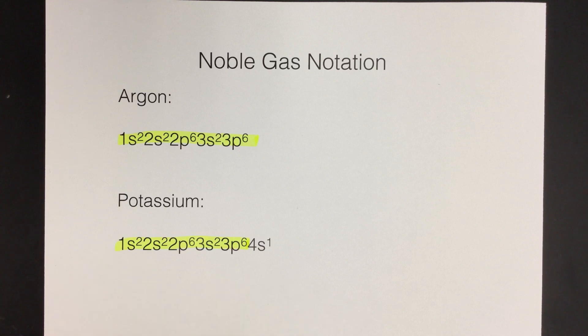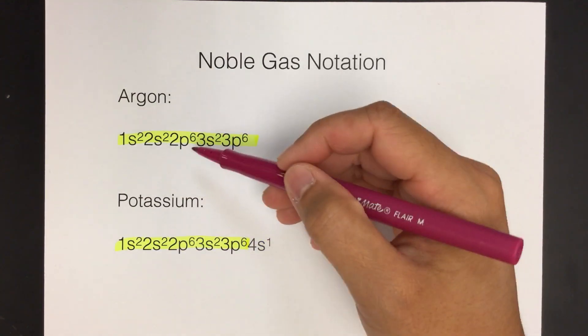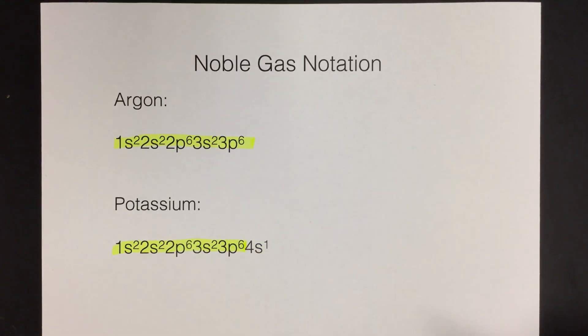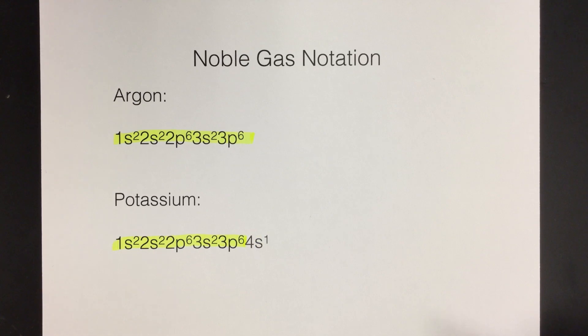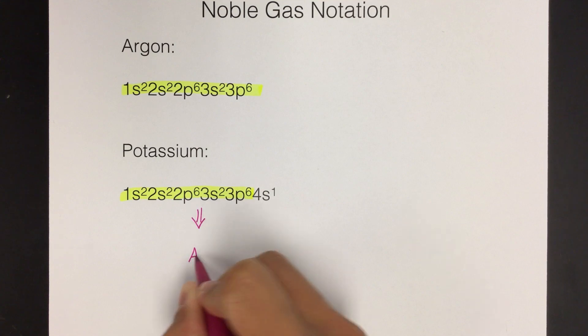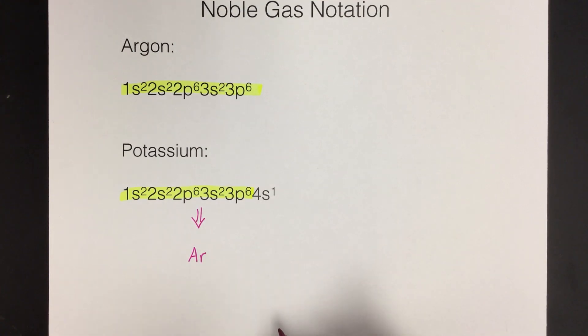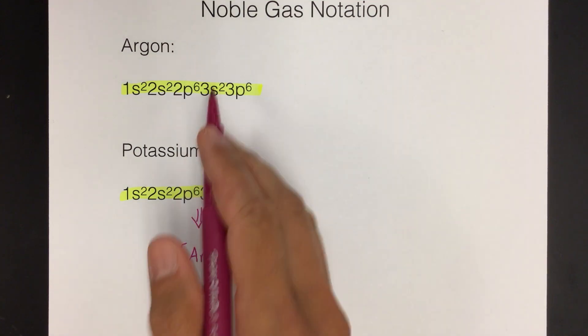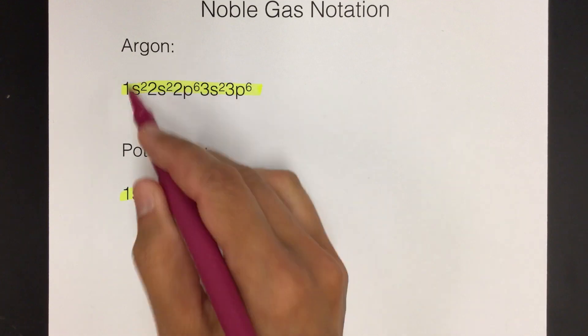The only different part in potassium is that there's an extra 4s1 at the end. So what we can do to save a lot of time is to actually just substitute in argon's configuration for this huge chunk of information. So this all becomes argon, but it has to be a special argon notation. We have to put it in brackets. So that is the stand-in for the electron configuration for argon. So argon in brackets means this whole thing.